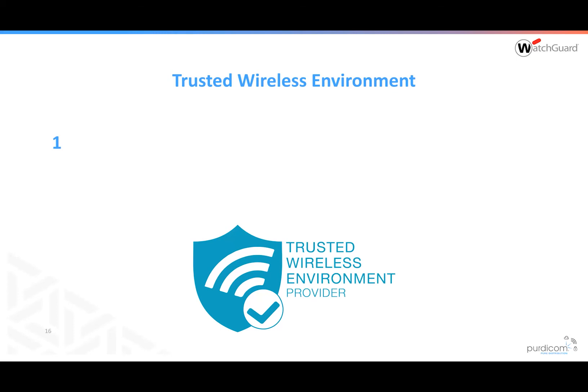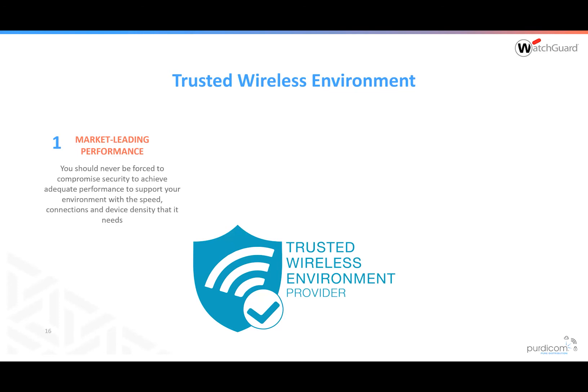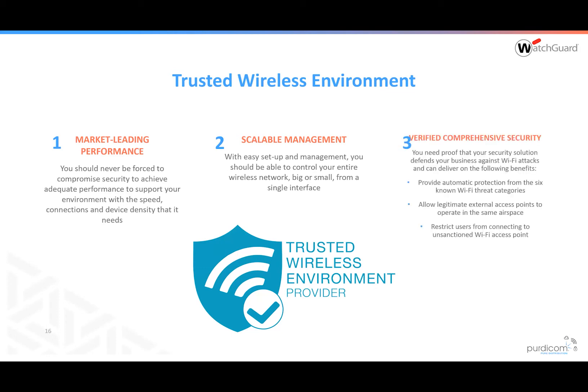Wi-Fi safety means, first, market-leading performance — making sure users get the top speeds advertised on their Wi-Fi. Number two, scalability — not being held to ransom by controller limits of only 50 access points. And three, verifying that their security does what it claims, but most importantly protecting users against the six known Wi-Fi threats and allowing users to work without any hindrance.